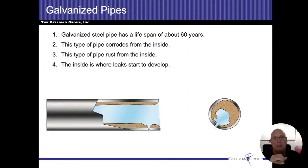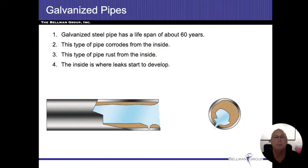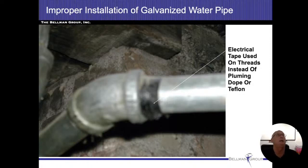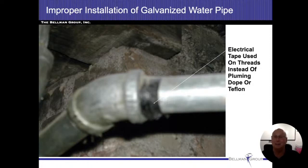What I want you to take out of this slide: galvanized pipe corrodes from the inside. It's kind of like having a heart attack — everything just closes up on the inside until the water can't flow anymore. As a bit of a joke — this was actually something we found. It was a galvanized plumbing system and somebody decided to use electrical tape instead of Teflon tape or dope. Surprisingly, it didn't leak. Maybe that is something that can work.